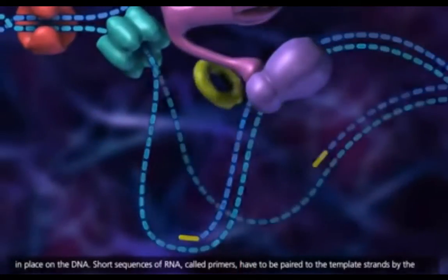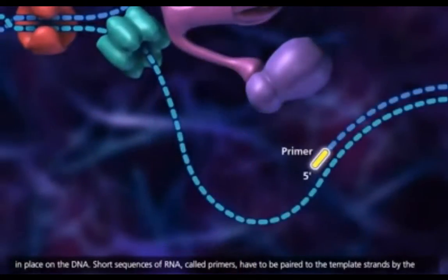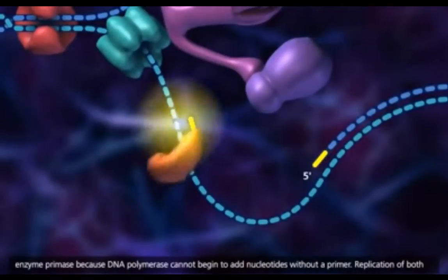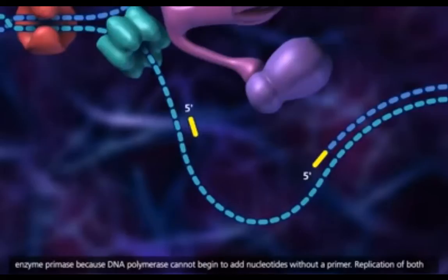Short sequences of RNA, called primers, have to be paired to the template strands by the enzyme primase because DNA polymerase cannot begin to add nucleotides without a primer.